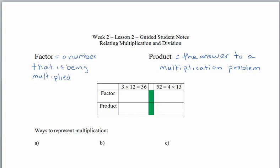Let's see what you've got. In the first problem we have 3 times 12 equals 36. The 3 and the 12 are being multiplied, so 3 and 12 are both factors. The product, the answer, is 52. In the second problem, 52 is equal to 4 times 13. It's the 4 and the 13 that are being multiplied, so we have two factors, 4 and 13. The product, the answer, is 52.